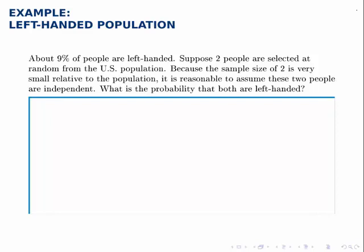About 9% of people are left-handed. Suppose two people are selected at random from the US population. Again because the sample size of two is very small relative to this large population, it's reasonable to assume that these two people are independent. In other words, they won't change the problem in any significant way by assuming they're independent.